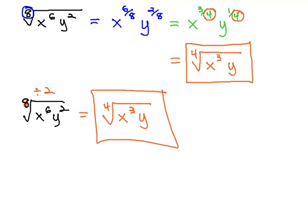We can therefore reduce the index on a radical by dividing the index and all of the exponents by the same common factor.